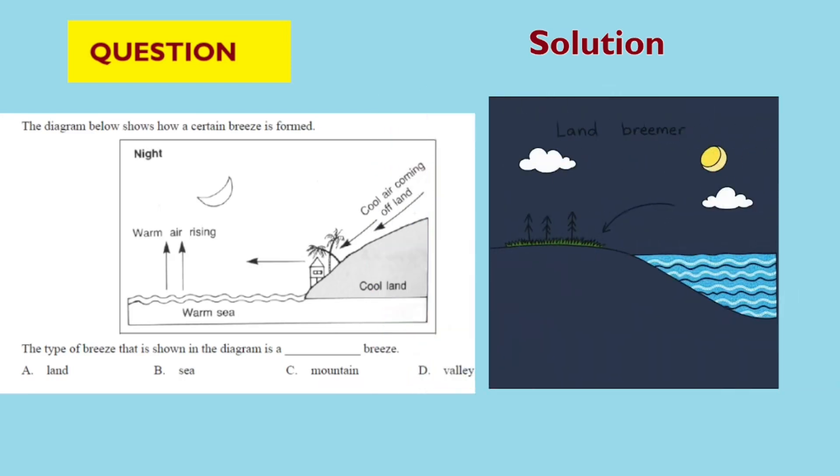Fourth, understand the concept. This type of air movement is characteristic of a land breeze, which typically occurs at night when the land cools faster than the sea, causing cooler air to move from the land to the warmer sea.